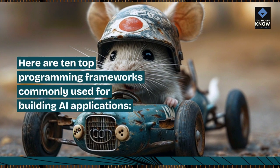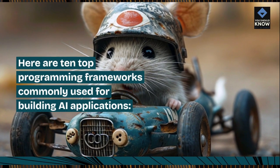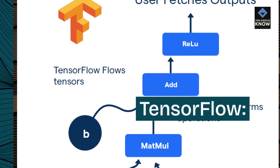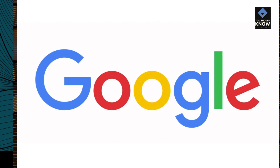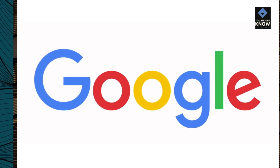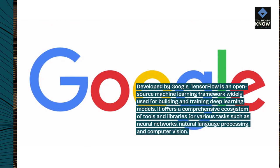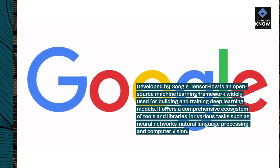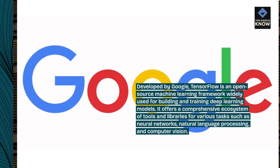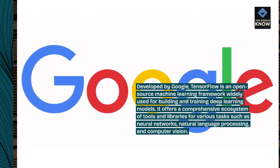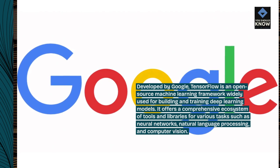Here are 10 top programming frameworks commonly used for building AI applications. Developed by Google, TensorFlow is an open-source machine learning framework widely used for building and training deep learning models. It offers a comprehensive ecosystem of tools and libraries for various tasks such as neural networks, natural language processing, and computer vision.